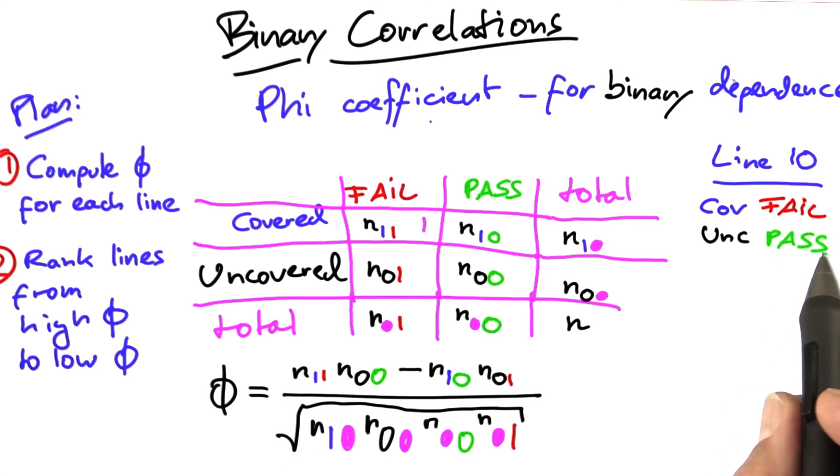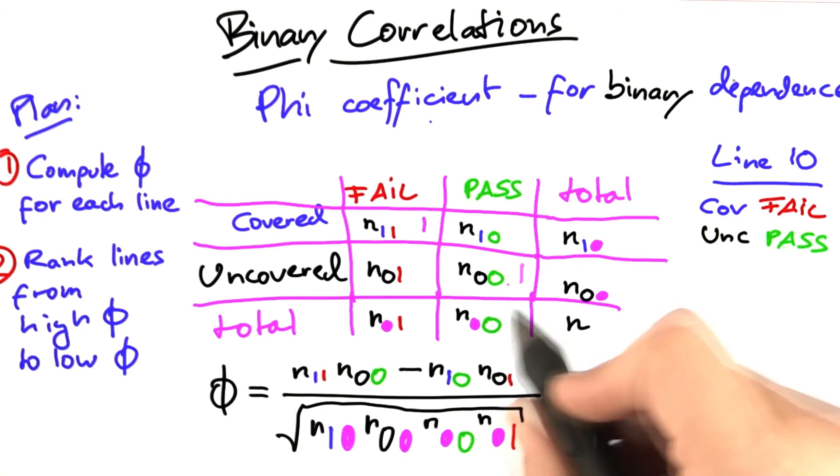Next thing that happens with this line, is that it's not covered, and the run passes. So, we add a 1 in this part of the table.